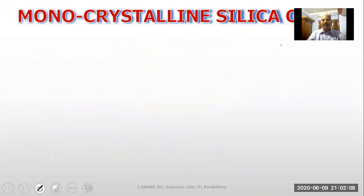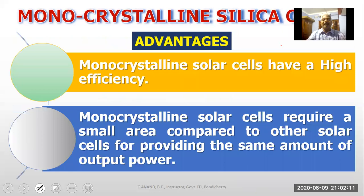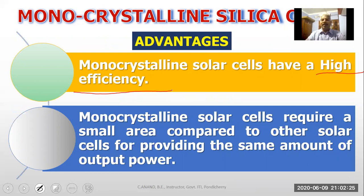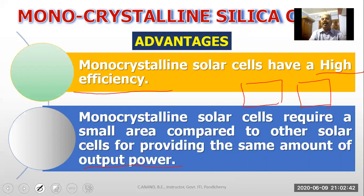What are the advantages of monocrystalline solar cells? They have very high efficiency and are able to produce high power output. Monocrystalline solar cells require a small area compared to other solar cells for providing the same amount of output power.